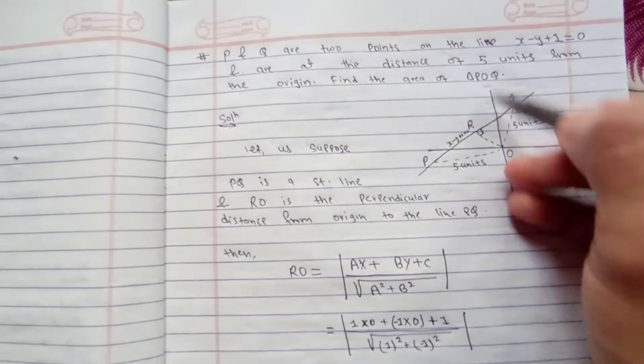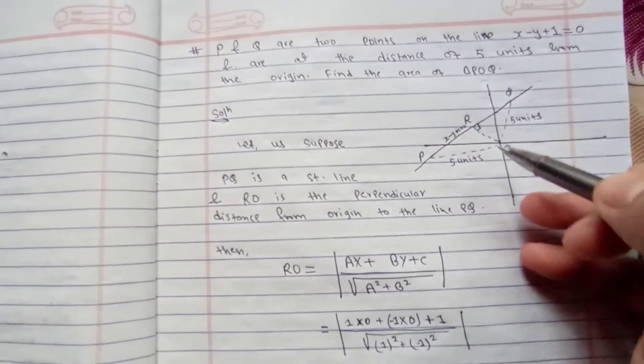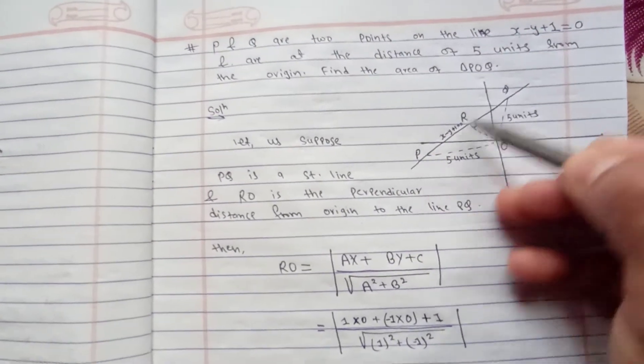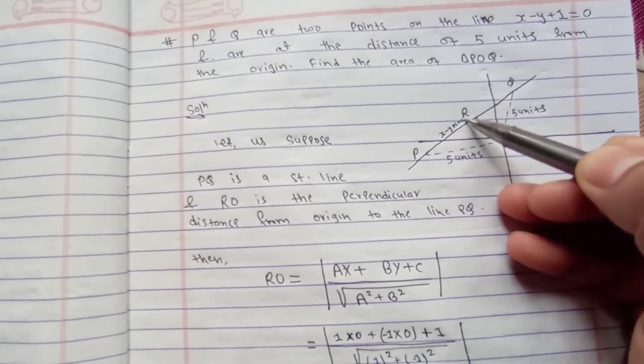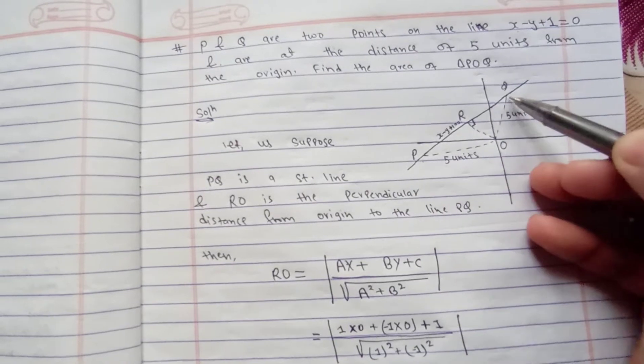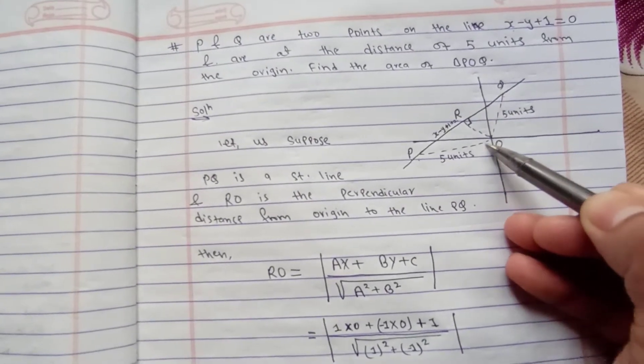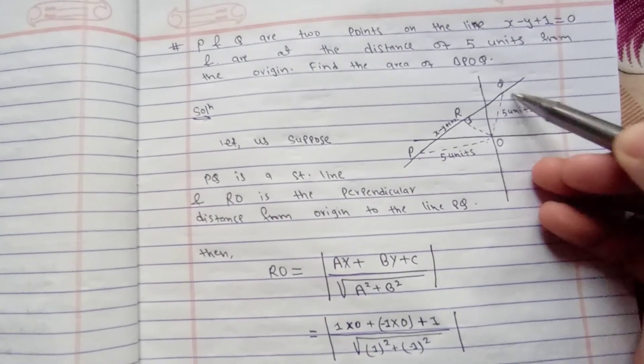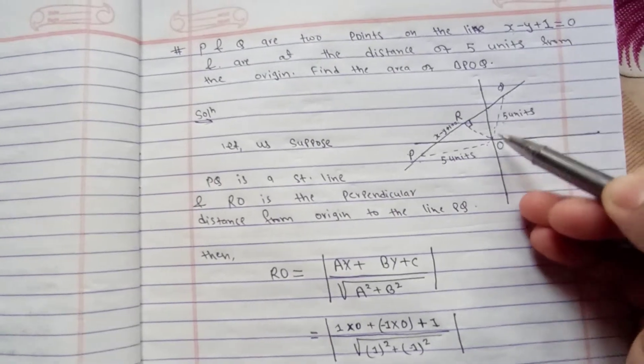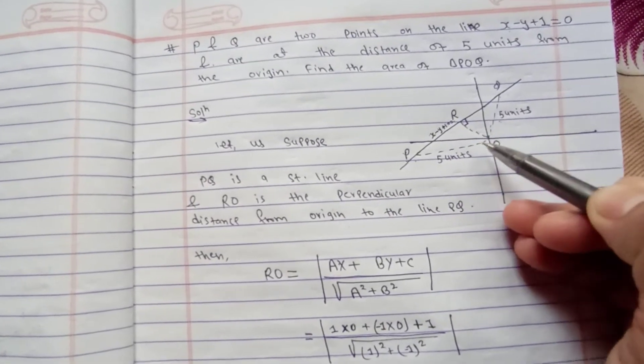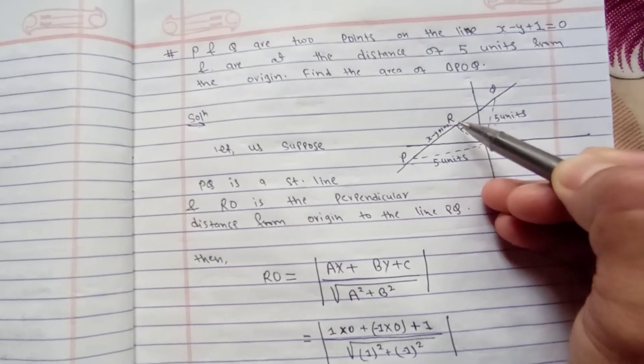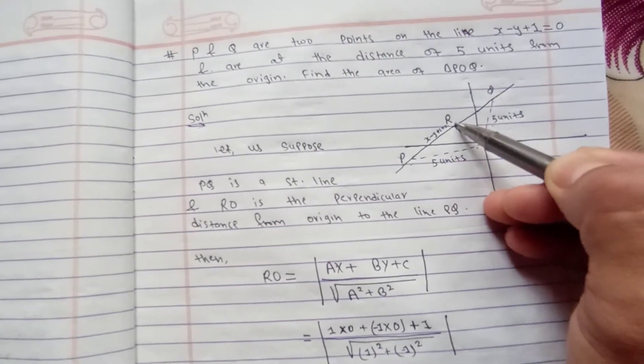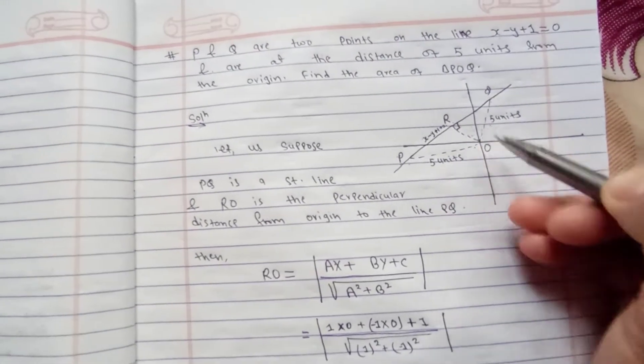If we draw the tentative figure, PQ is the straight line with equation x minus y plus 1 equals to 0. P and Q are points whose distance from origin is five units. OP and OQ are five units. We construct the perpendicular distance from origin to the straight line at point R.